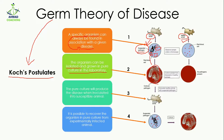The third postulate states: a pure culture will produce the disease when inoculated into a susceptible host. If you take this pure microorganism and inoculate it into a healthy or susceptible mouse — 'susceptible' meaning an animal that can get the disease — that organism will develop the disease. Some organisms cannot get the disease because their immune system is very strong; if the immune system is not strong and you inoculate the bacteria, that individual will get the disease.